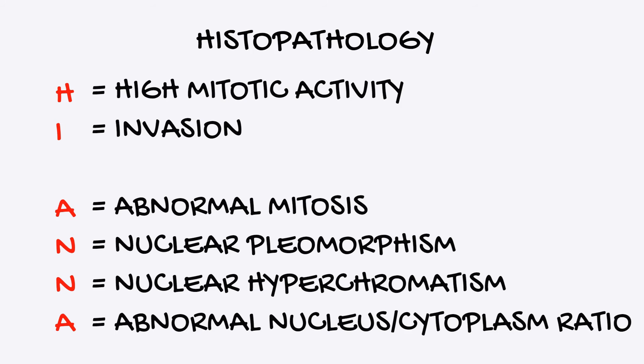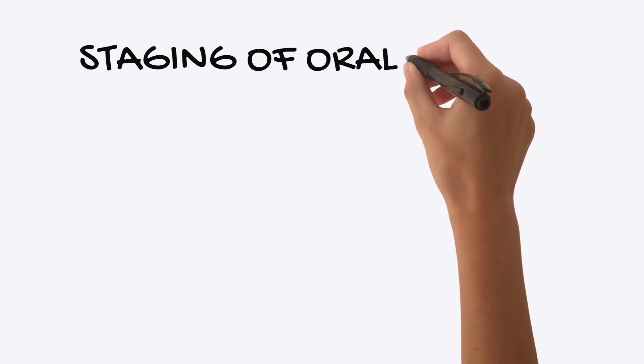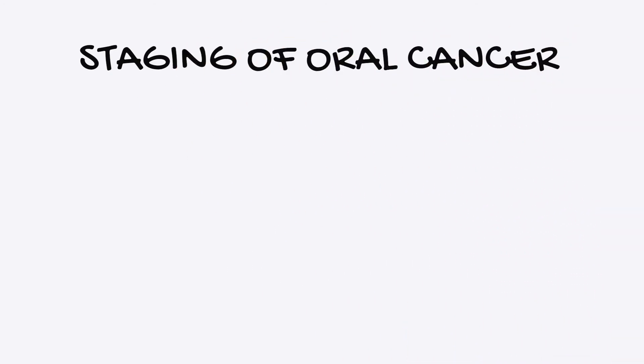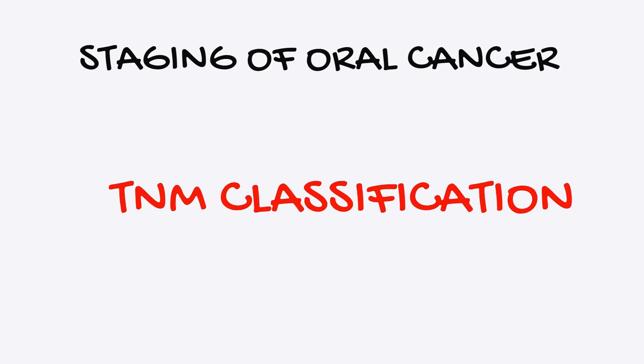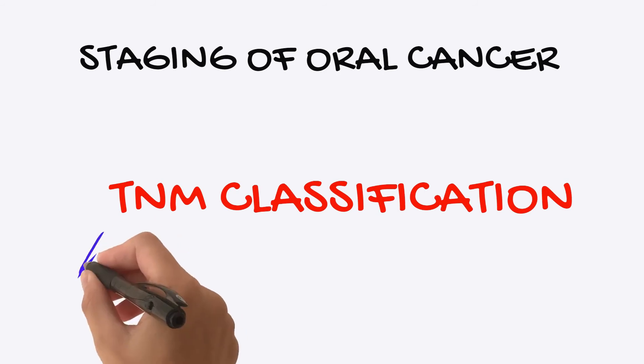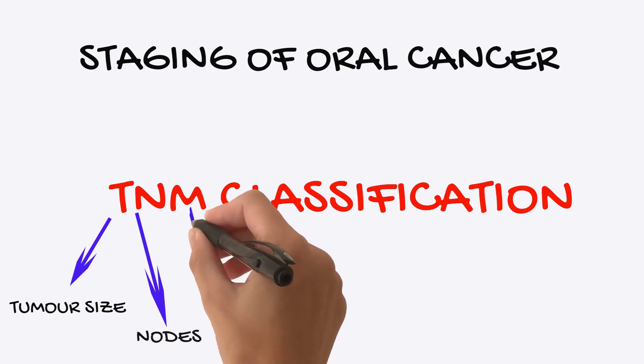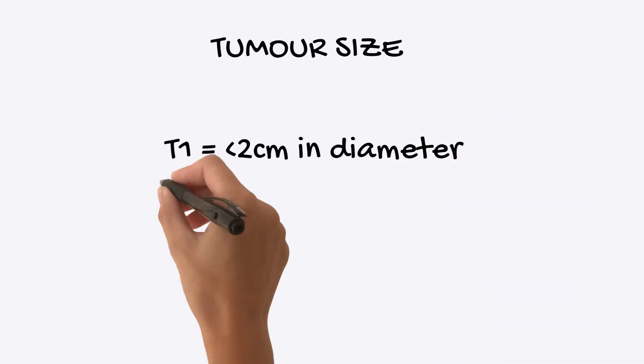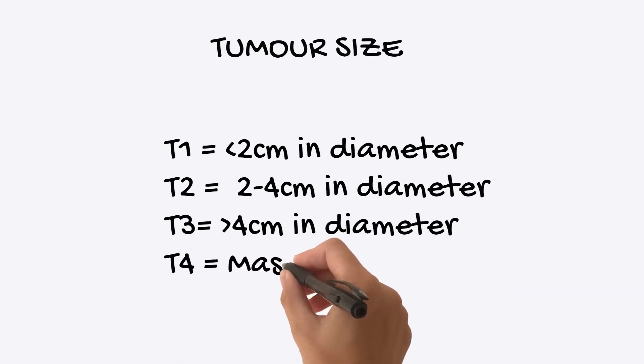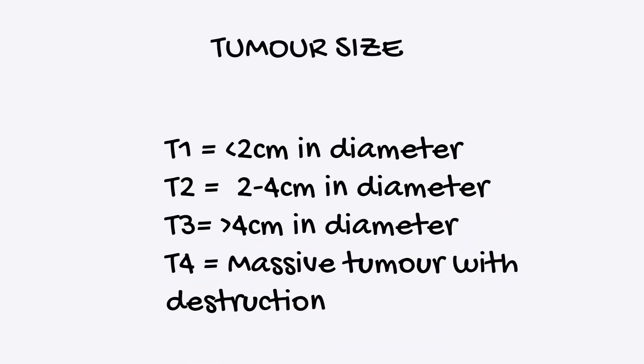Once oral cancer is diagnosed, it is important to stage the tumour to determine treatment. We use the TNM classification. T is the primary tumour: T1 is a tumour less than 2 cm in diameter; T2 is between 2 and 4 cm; T3 is greater than 4 cm; and T4 is a massive tumour invading other structures.